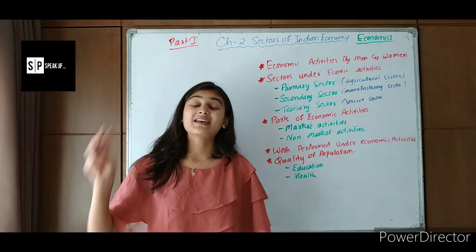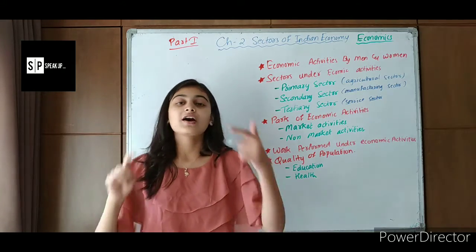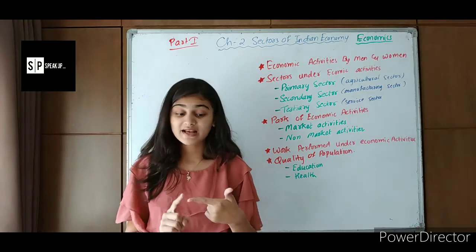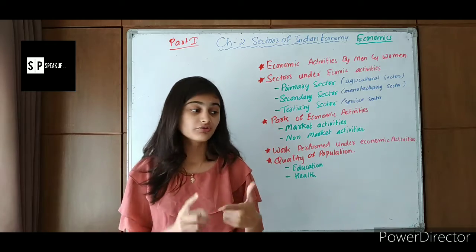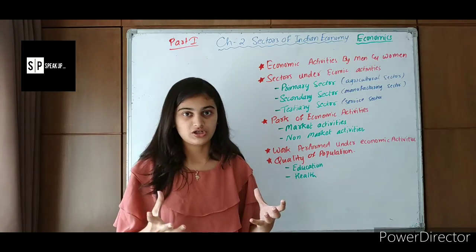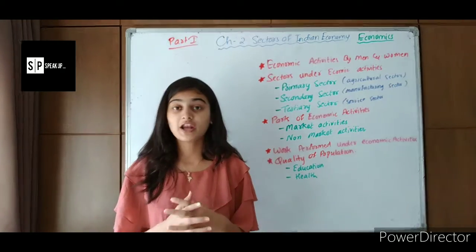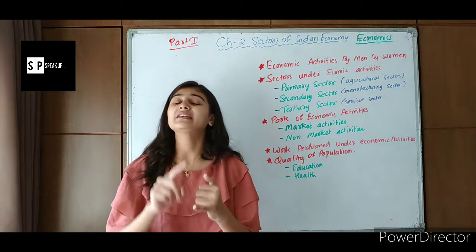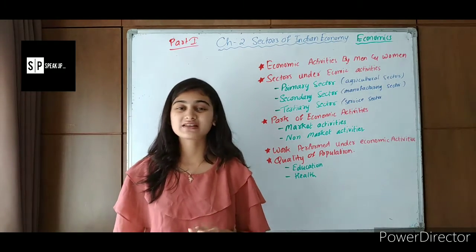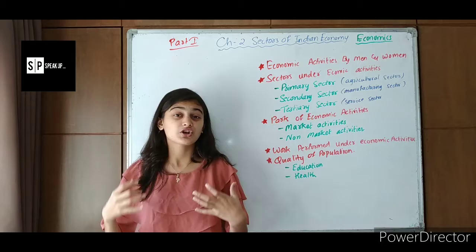Under economic activities, there are three sectors: primary, secondary, and tertiary. The primary sector is also known as the agricultural sector. The primary sector involves the production of raw materials. This production can include fishing, mining, agricultural production, harvesting, or any other production activity. Fishing involves the production of fish, and mining involves the production of minerals.